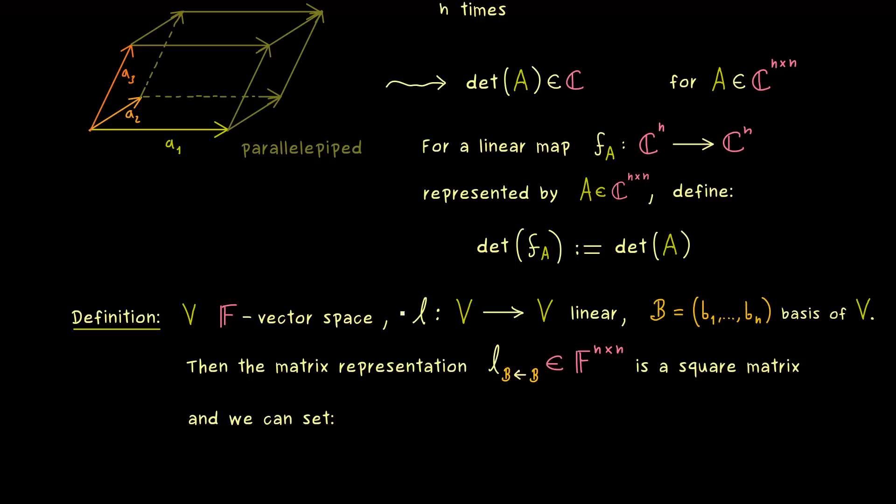And now as before, we can use this matrix to define the determinant of the linear map. This implies that determinant of L is a real or complex number. So there you see, this is the whole definition for the general determinant of a linear map.